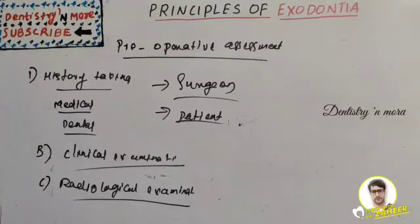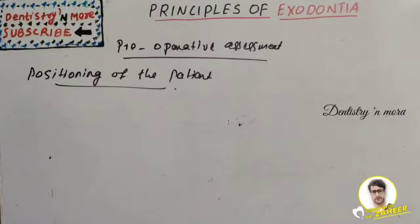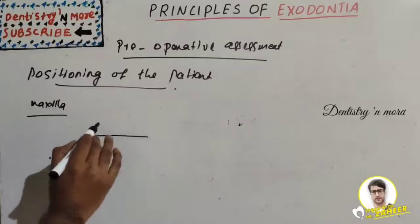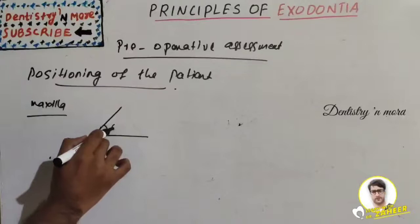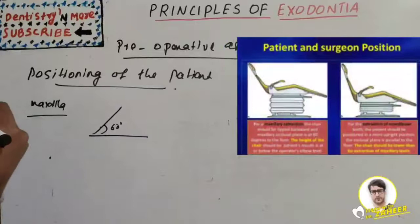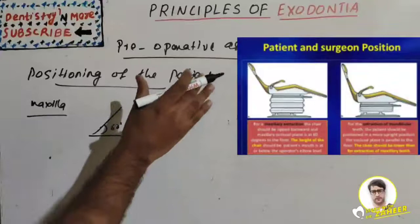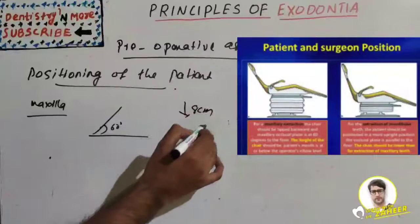Now the important part — positioning of the patient. Proper positioning reduces the fatigue of the surgeon. For the maxilla, the chair should be tipped backward so that the maxillary occlusal plane is at 60 degrees to the floor. The height of the dental chair should be eight centimeters below the shoulder level of the operator.